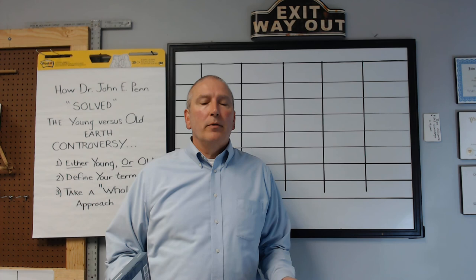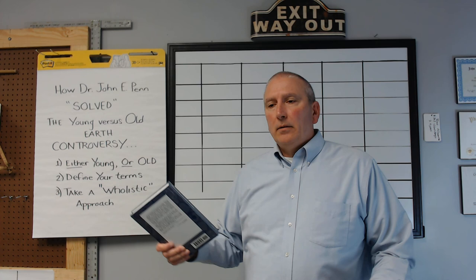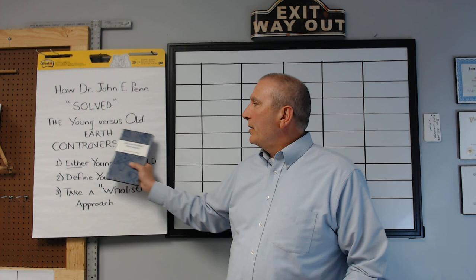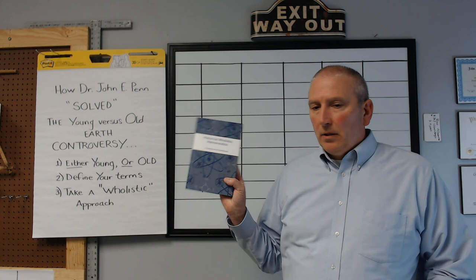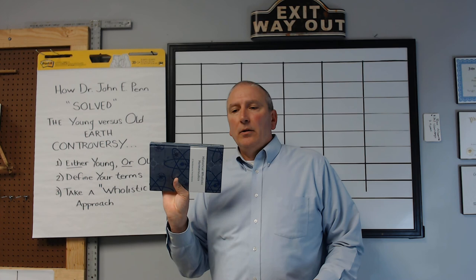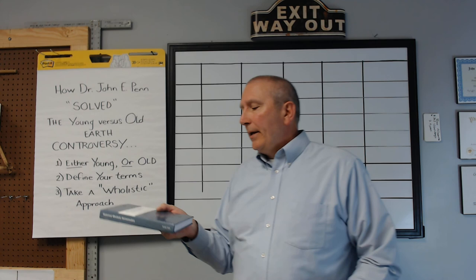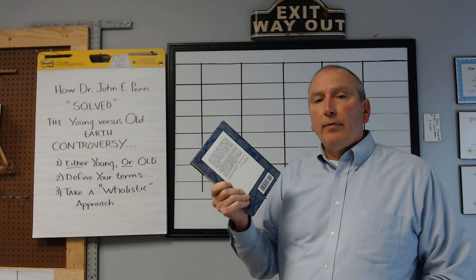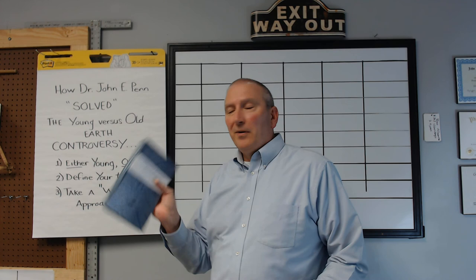This video is somewhat of a rationale for the solution that was scripted and developed. I titled it 'How Dr. John Penn Solved the Young vs. Old Earth Controversy,' and of course this is his historical holistic hermeneutic approach. This is just a handbook for practitioners in PDF format. You can get this at LAMP Theological Institute — go to baptistlamp.org and you can download this. Of course the hard copy is nice.